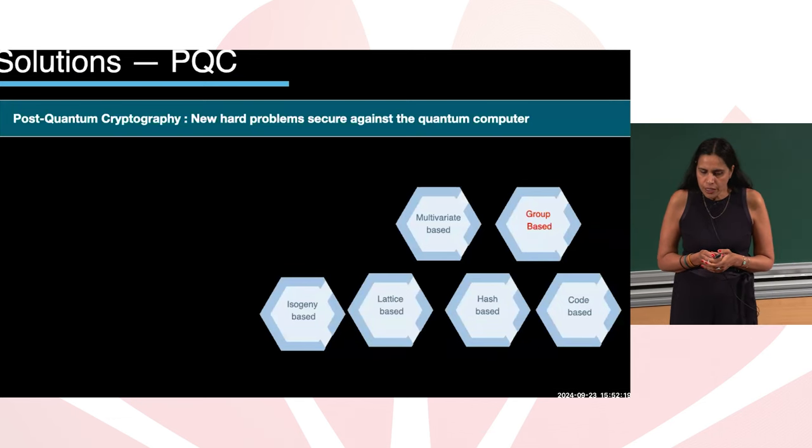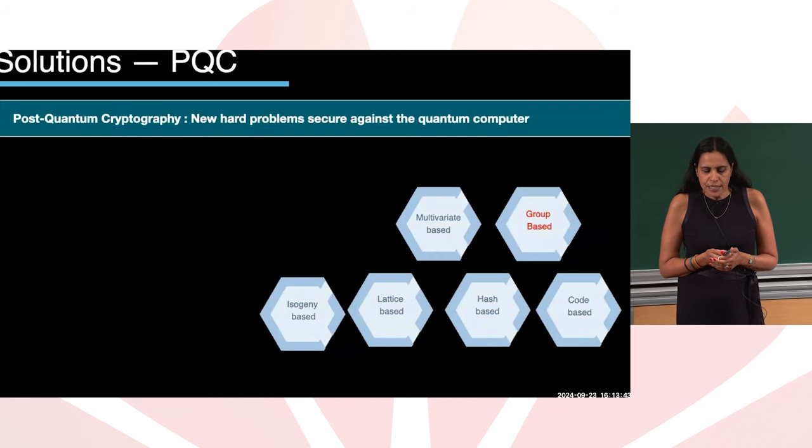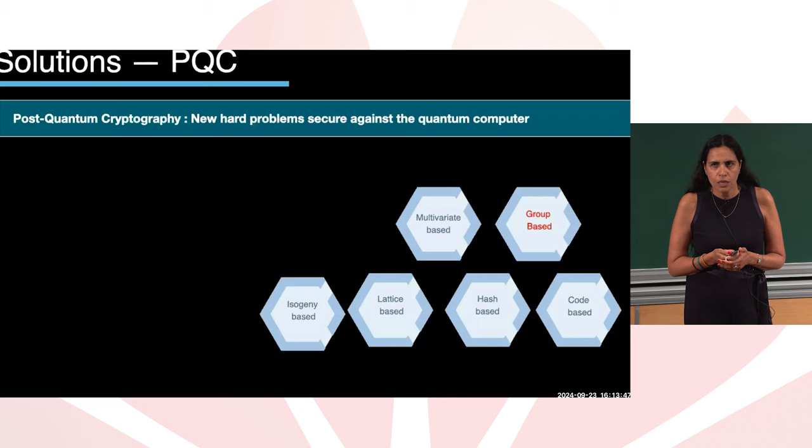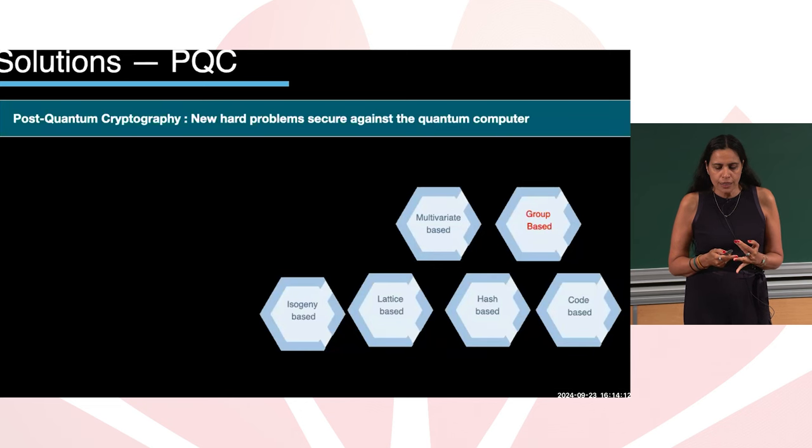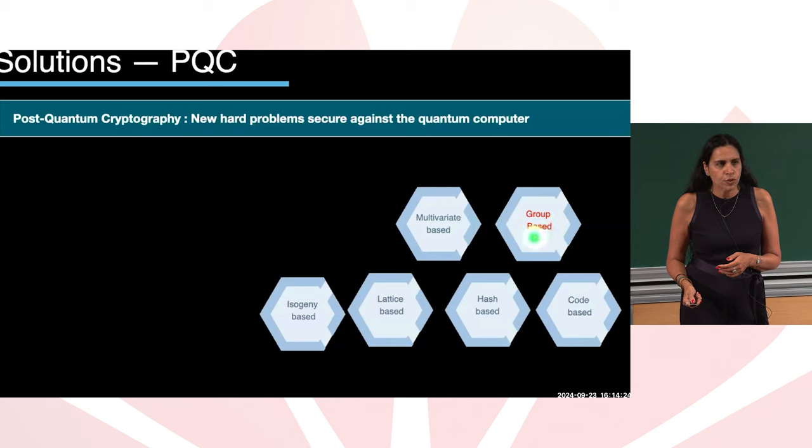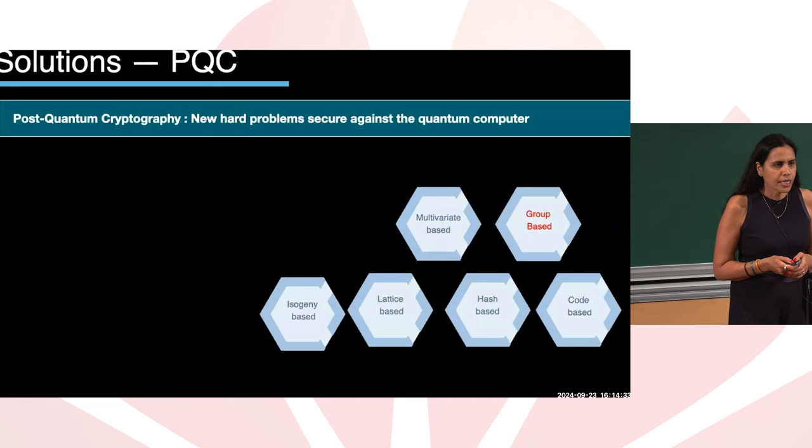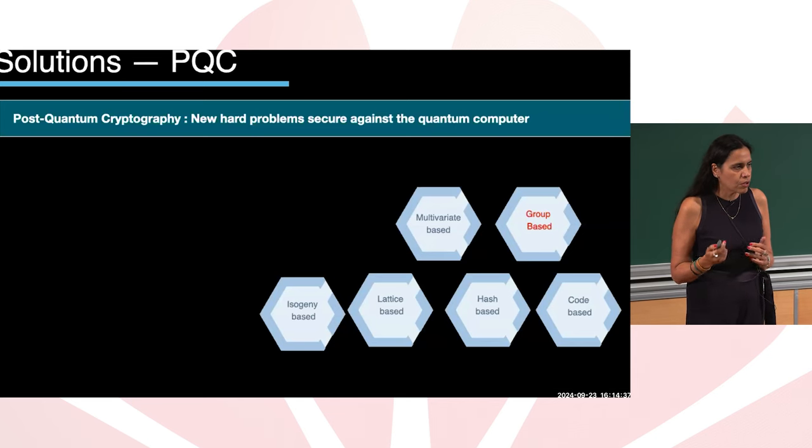You may ask me, what's the solution? The solution is post-quantum cryptography, or we call it PQC. These are basically new hard problems secure against quantum computers. In some cases, NP-complete or NP-hard problems. For example, the most famous one being deployed is lattice-based cryptography, based on shortest vector problem or learning with error LWE problem. And today I'm going to talk to you about group-based cryptography, in which we use hard algorithmic group theoretic problems for cryptography.